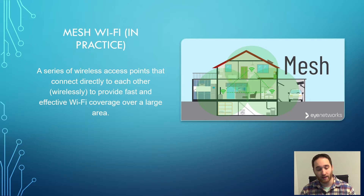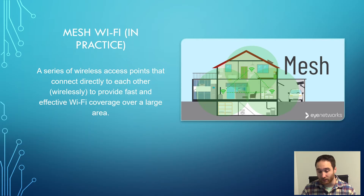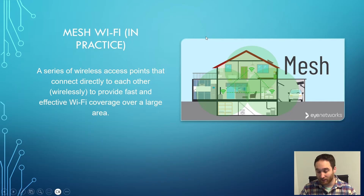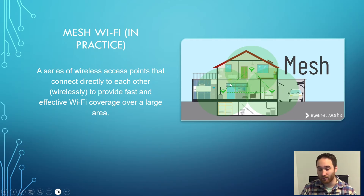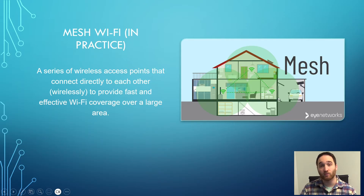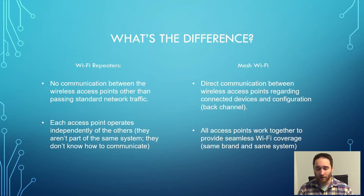In practice, mesh Wi-Fi is a series of wireless access points that connect directly to each other wirelessly to provide fast and effective Wi-Fi coverage over a large area. Looking at this graph, we have an example of a basic home mesh system with three wireless access points that can all communicate directly with one another, creating a seamless Wi-Fi signal that covers the entire house — much more than you could cover with just one access point.